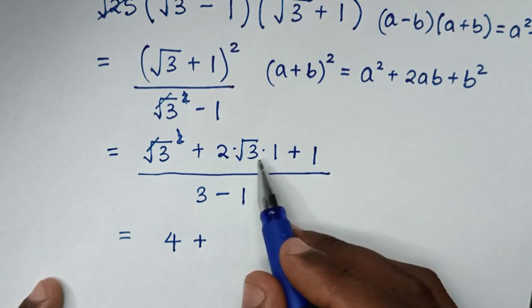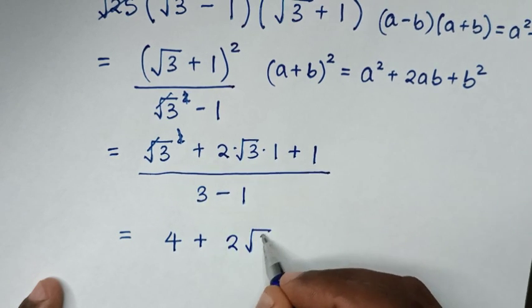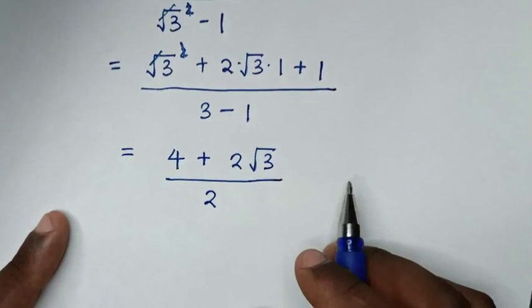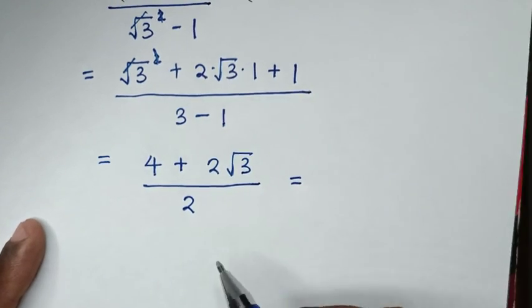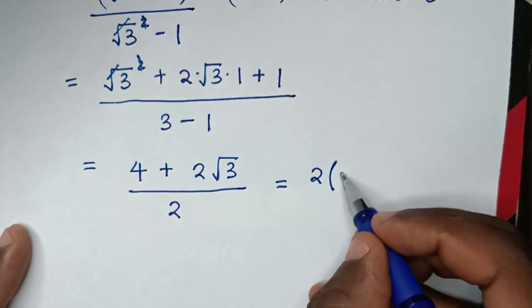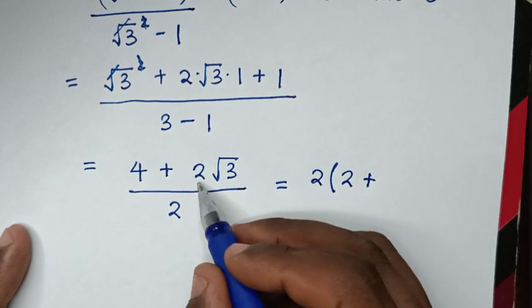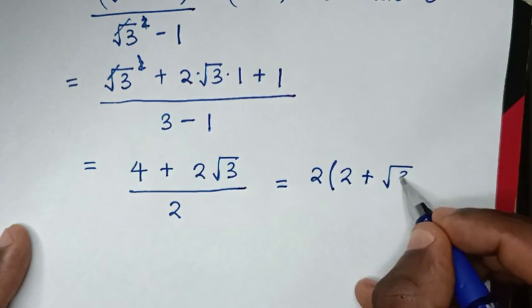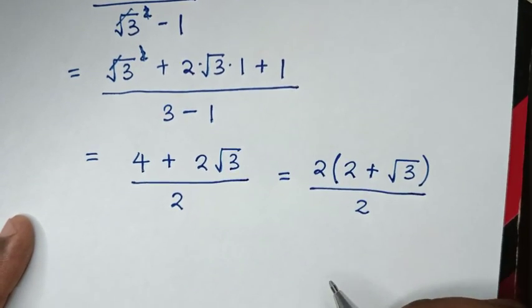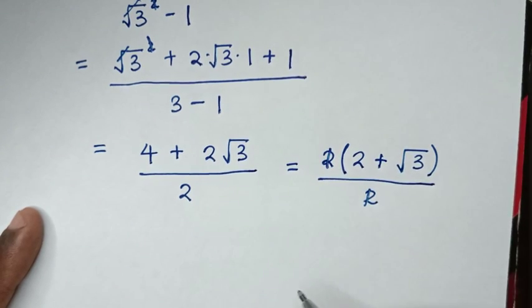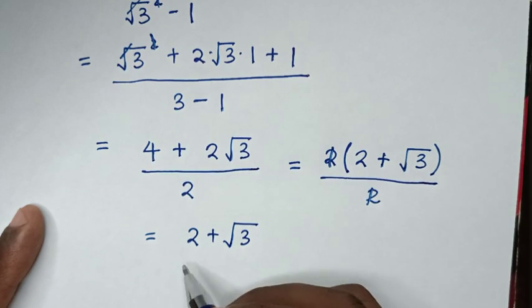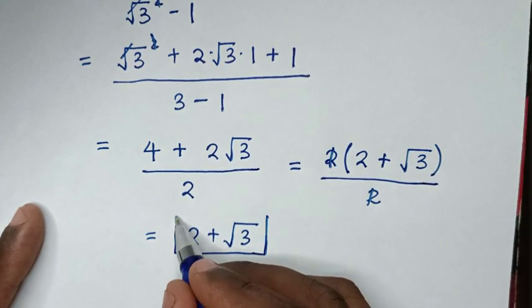Expanding the numerator: 2 times square root of 3 times 1 gives 2 square root of 3, over 3 minus 1 which is 2. Then 2 is common so we take 2 out of the bracket: 4 divided by 2 is 2, plus 2 square root of 3 divided by 2 is square root of 3, all over 2. This simplifies and the 2s cancel, giving the answer 2 plus square root of 3.